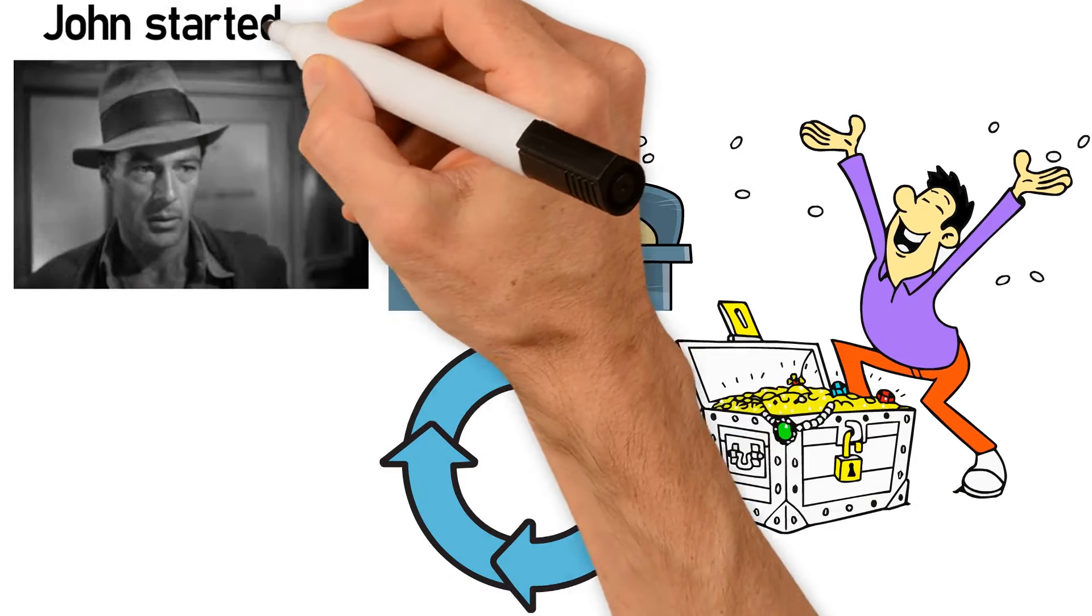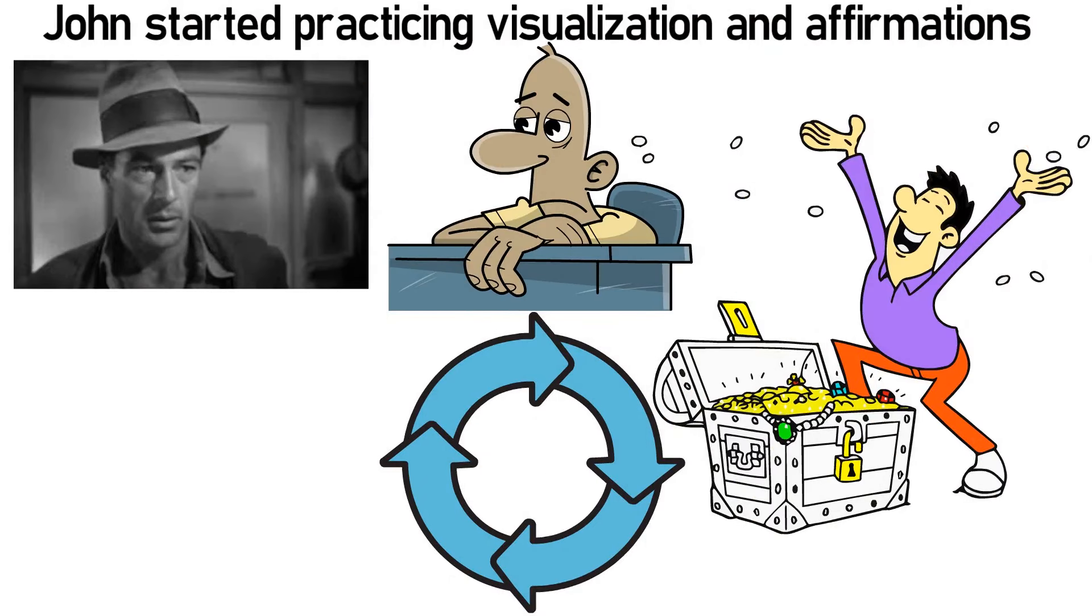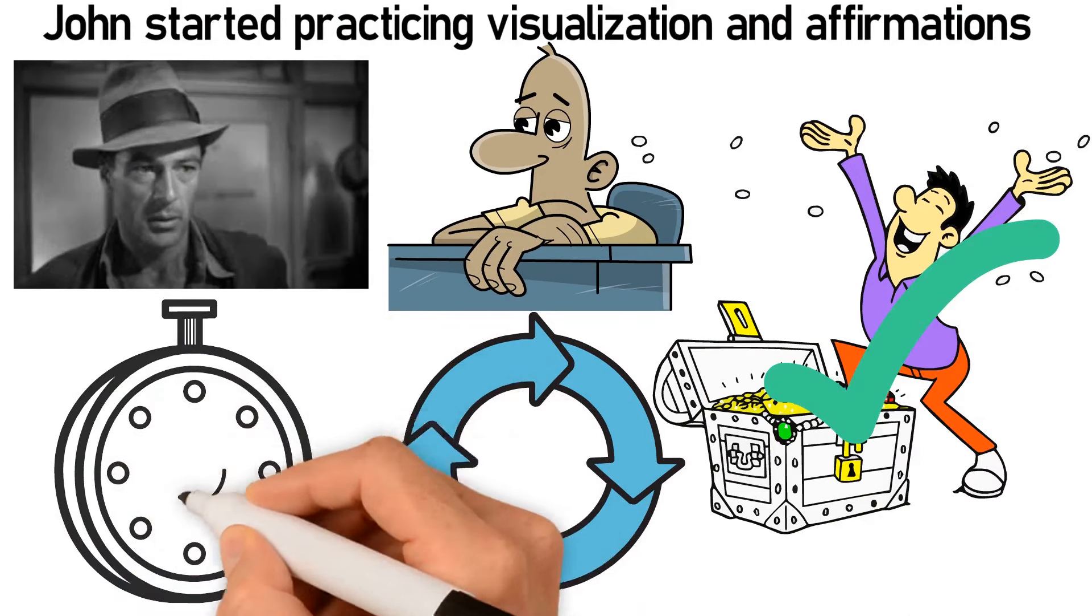John started practicing visualization and affirmations, picturing himself in a state of financial abundance. Slowly, his perspective and circumstances began to change.